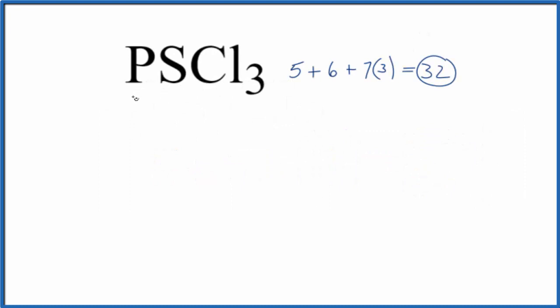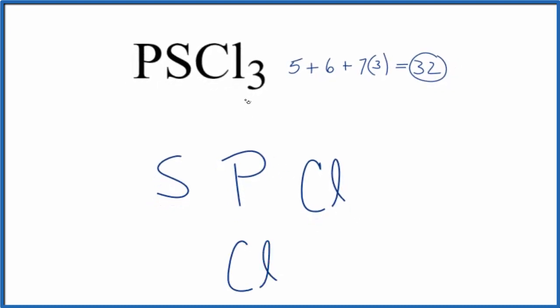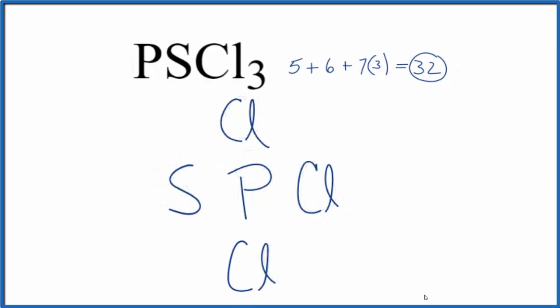The phosphorus is the least electronegative element here. So even though it's written with sulfur in the center, I want to put the least electronegative element in the center of the structure. So I'm going to put the phosphorus in the center, the sulfur over here, and then 3 chlorine atoms around it.